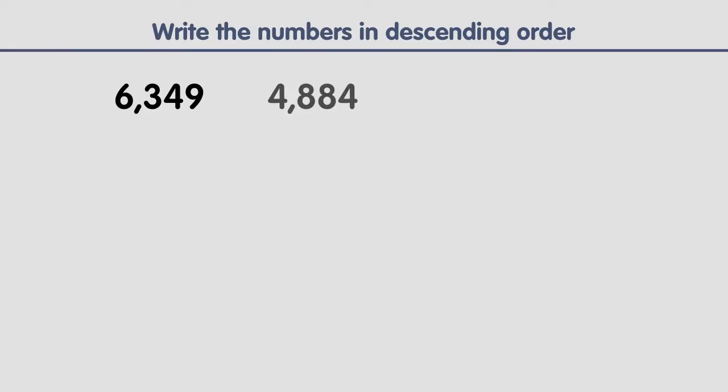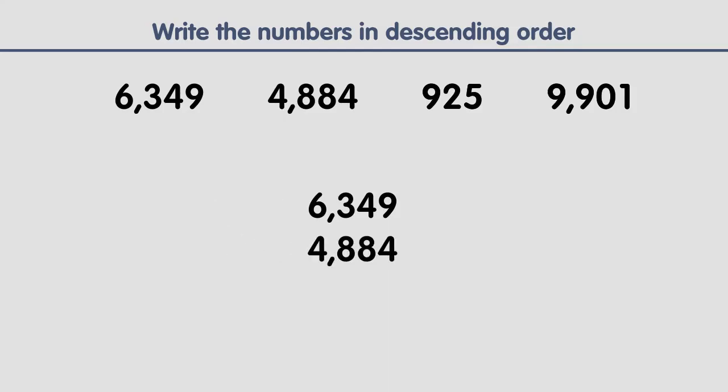Write the following numbers in descending order. Descending order means writing the numbers from largest to smallest. The first step is to write all the numbers one below the other. The second step is to put zeros to the left of numbers with fewer digits. Now all the numbers have the same number of digits.